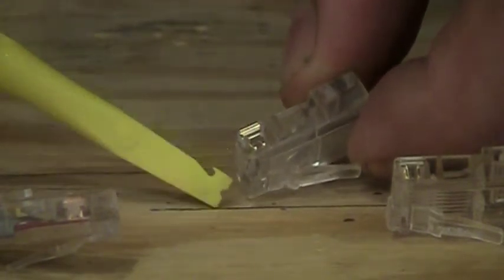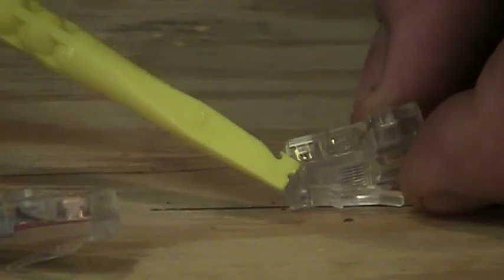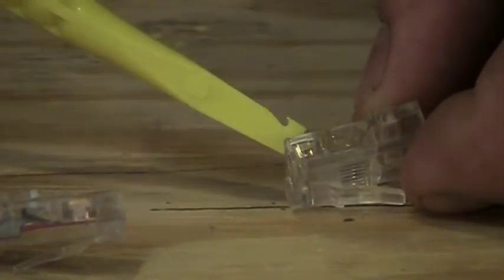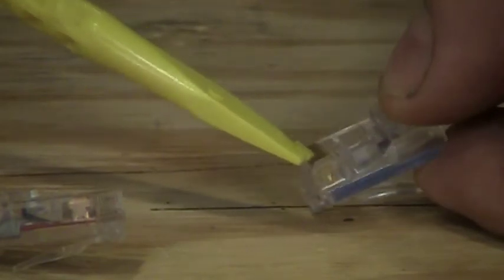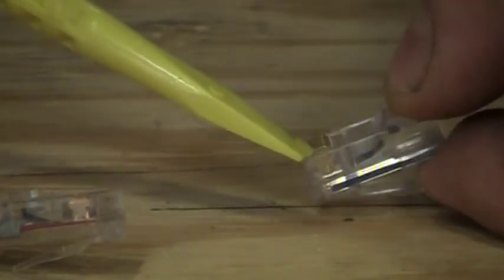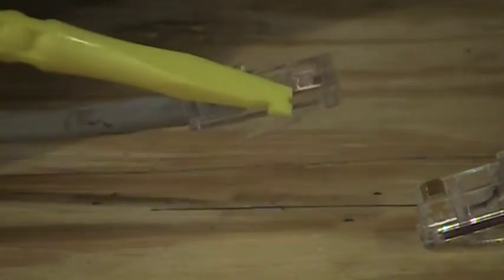That one little tip will save you a ton of time in the field right there. So, we're going to be putting a plug ready for solid on solid category 5E cable. Now, you'll also notice the pins are sitting up. They're a little proud of the plastic housing. As they get driven on top of the conductors, they'll be down below the body.